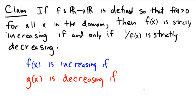We're going to assume that f is a function defined from ℝ to ℝ, and it's defined so that the values f of x — the values at all real numbers — will always come out to be positive. That'll be important for this argument. If that's the case, we're going to be able to show that f of x is strictly increasing if and only if 1 over f of x is strictly decreasing.